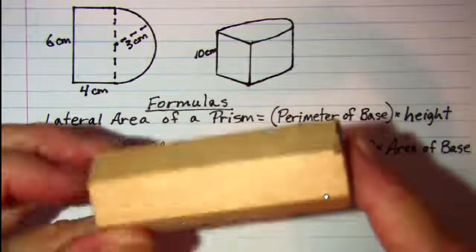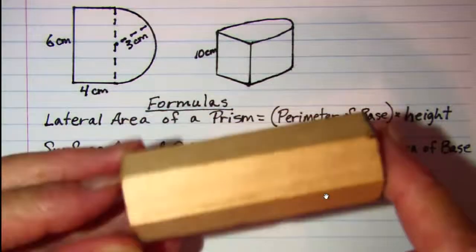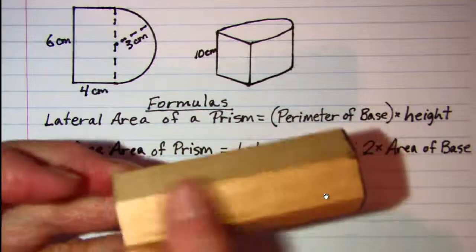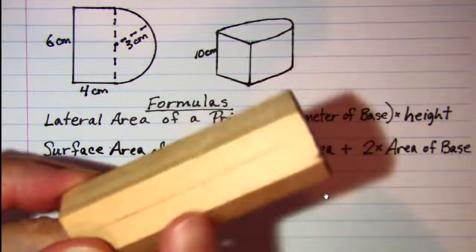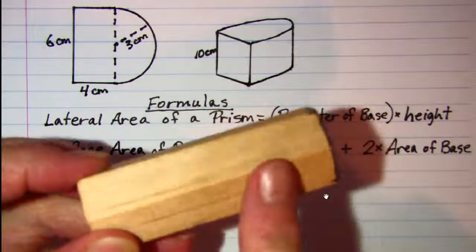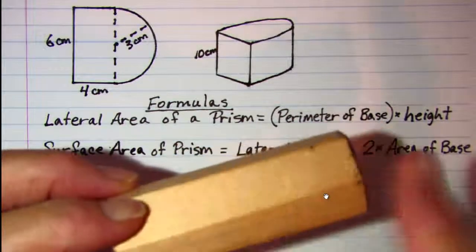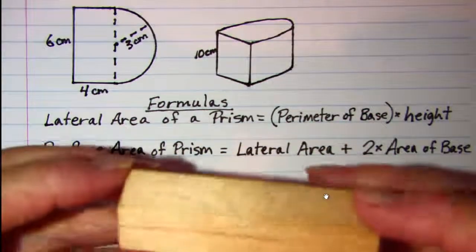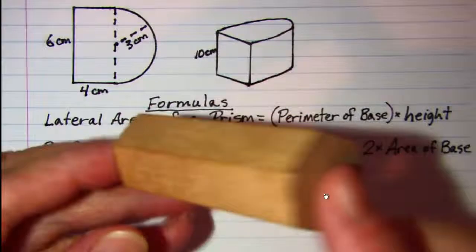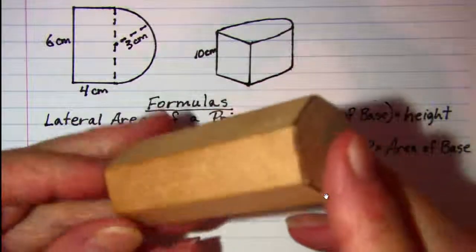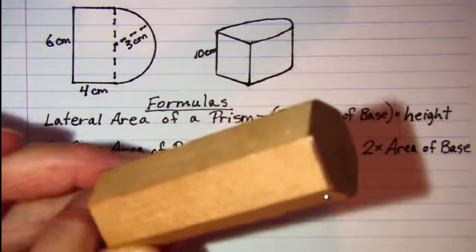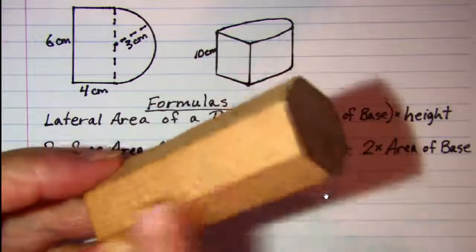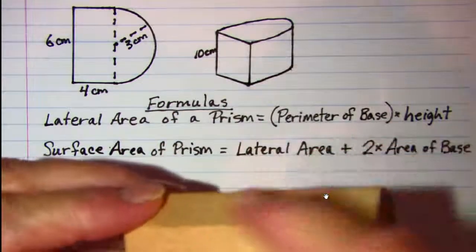The two bases are parallel to each other and the lateral surface area is this area around the edge. It is made up of six rectangles in this case, but as far as the prism goes, we have the two bases, the two hexagons, and then the lateral surface is this edge right around here.